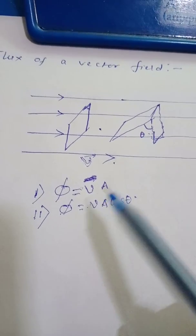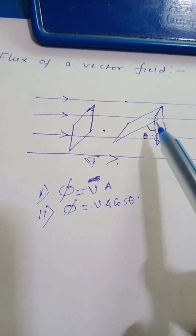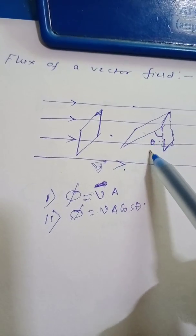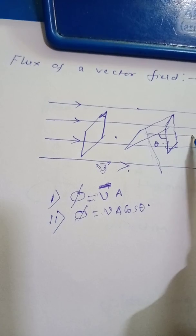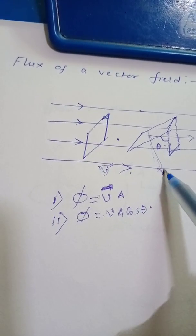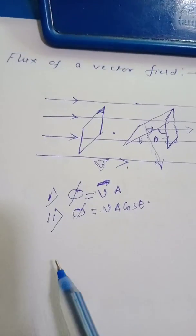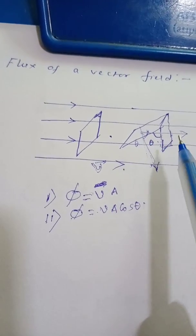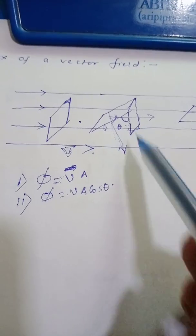If you consider V as the velocity vector and A as the area vector — the area vector is always perpendicular to the area — then this is the direction of the area vector and this is the direction of the velocity vector, and this angle is theta. So you can say that the flux passing through the area normally is equal to V A cos theta.